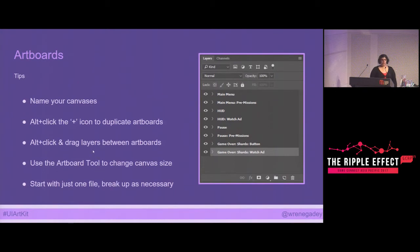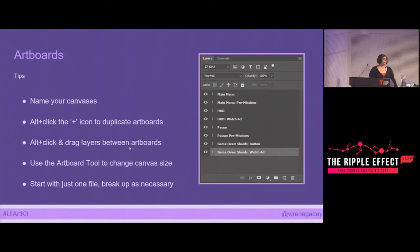My tips for artboards: name your canvases with reasonable names that communicate what they're for. Don't forget you can alt-click the pluses to duplicate an artboard, and alt-drag layers between artboards to duplicate them into the correct spot. Use the artboard tool to change your canvas size. For a game with a lot of screens, start with one file, and as it starts chugging, split it into a few files. With Rebound I ended up with about six files and roughly 60 screens between them.